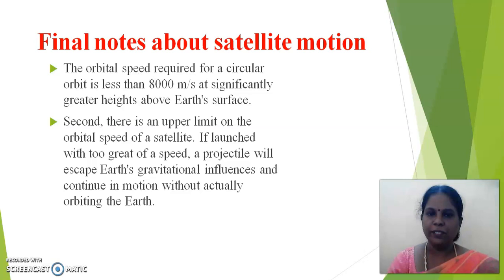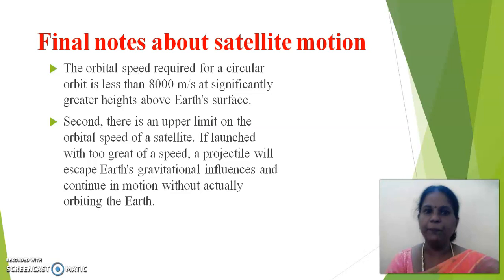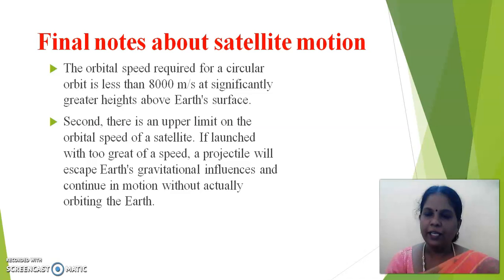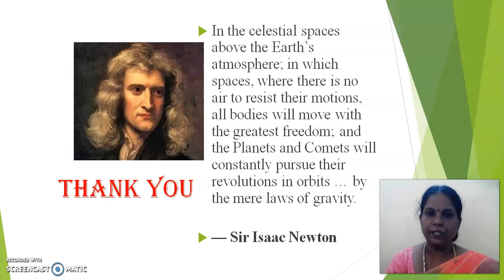Final notes on satellite motion: we have calculated that a satellite must be projected at 8,000 meters per second to fall around the earth rather than into it — that speed applies just above the earth's surface. If we project the satellite at a greater height, the required orbital speed for a circular orbit is less than 8,000 meters per second. Second, there is an upper limit for the satellite's speed — if launched with too great a speed, the projectile will escape gravitational influence and continue in motion without orbiting the earth.